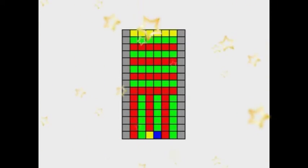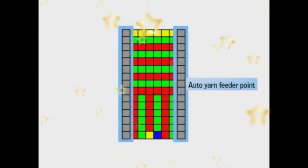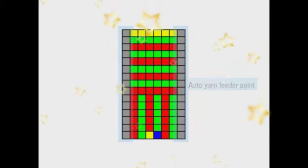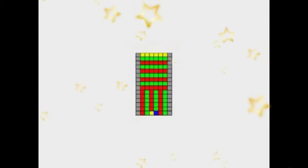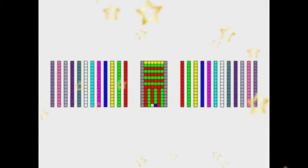Finally, draw auto yarn feeder point on both edges of the pattern. Now the pattern part is completed. Next process, draw option lines on both sides of the pattern.